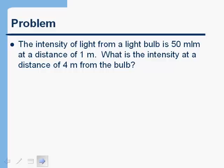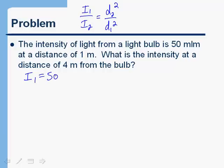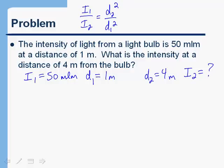Let's see how this relates to problems. The first problem involves visible light. Using the inverse square law — i1/i2 = d2²/d1² — the problem states: the intensity of light from a light bulb is 50 millilumens at a distance of one meter. What is the intensity at a distance of four meters from the bulb? So we know i1 is 50 millilumens at a distance of one meter, and we want to find i2 at a distance of four meters.